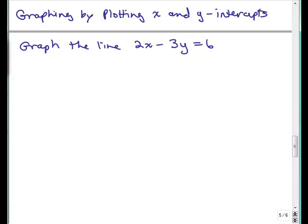Now, the best time to use this method, plotting by using x and y intercepts, is when it's not solved for y. So, for this problem here, 2x minus 3y equals 6, it's not solved for y. So, instead, what we're going to do is notice that